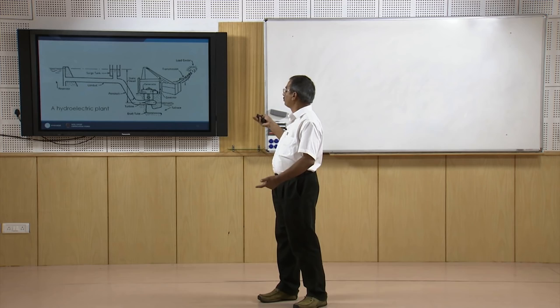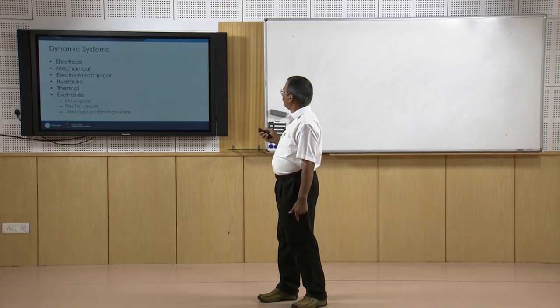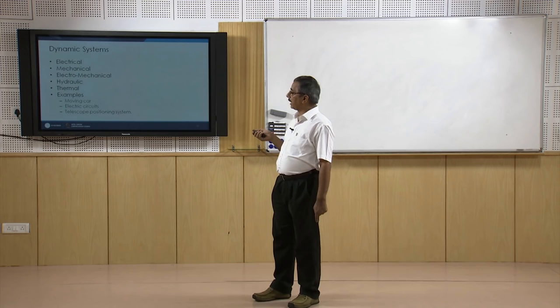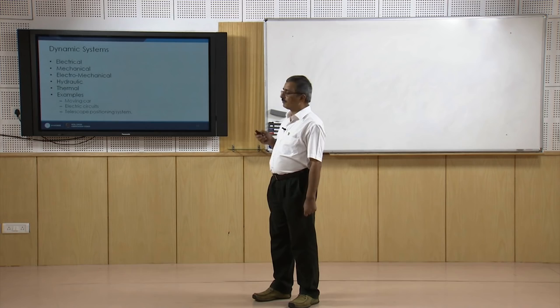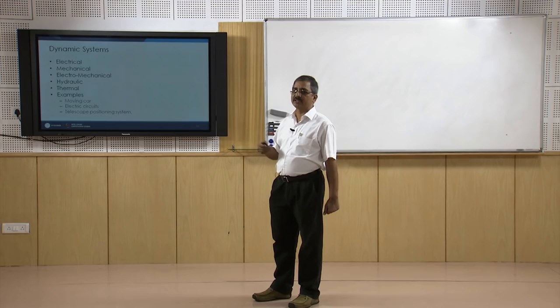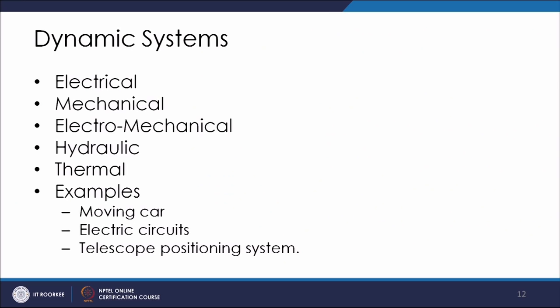As the course title suggests, we will be discussing modeling and simulation of dynamic systems. These dynamic systems could be in any energy domain — an electrical system, a mechanical system, an electromechanical system, a hydraulic system, or a thermal system. There are numerous examples: a moving car is a good example of a mechanical system, electrical circuits are examples of an electrical system, and a telescope positioning system involves combinations of mechanical, electrical, and control systems.